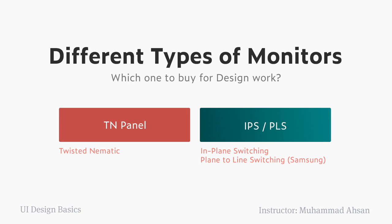There are actually two major kinds of monitor panels: one is the TN panel and another is IPS or PLS, which was developed by Samsung. TN panels are lower in cost, easier to develop, and are mostly called old LCD panels — they are still developed because they are cost effective. On the other side, IPS stands for In-Plane Switching and PLS stands for Plane-to-Line Switching, developed by Samsung, and it is very similar to IPS.